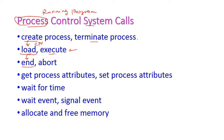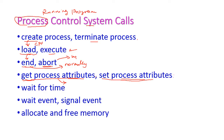After executing, we need to terminate that process, so we have the end system call to end that process. If there is any error in the execution, we have to abort that process. So end process is to end normally, and abort is used to terminate the process abnormally. The next ones are get process attributes and set process attributes. Every process has its own attributes — for example, process ID, process name, process size, running time — and these are called process attributes.